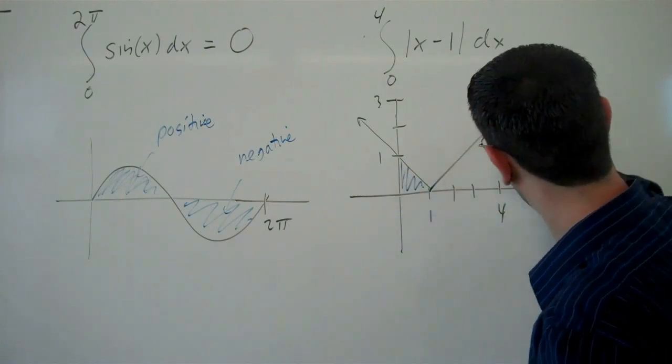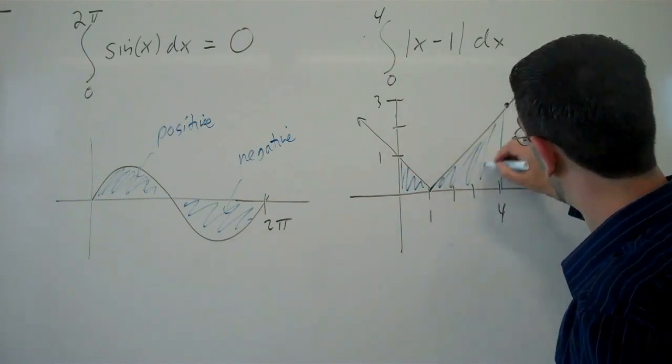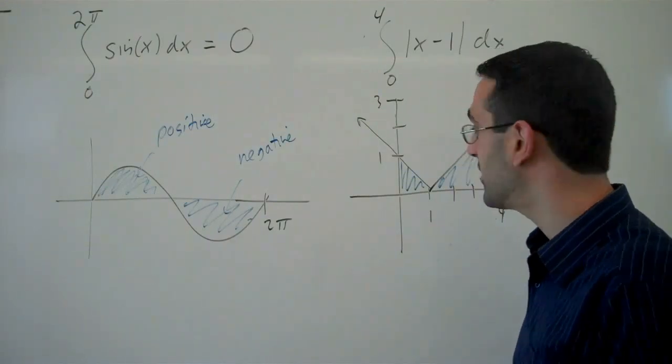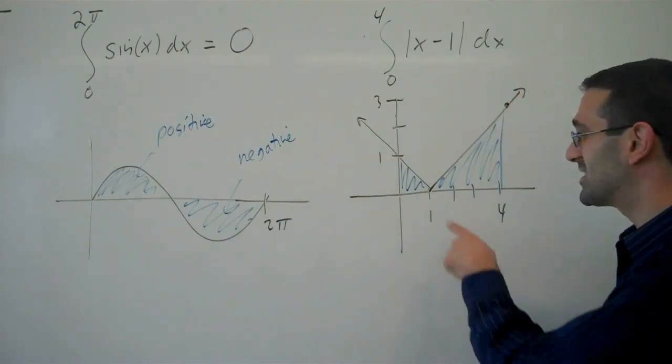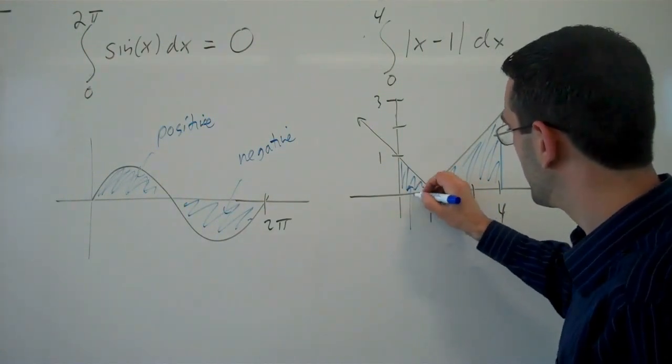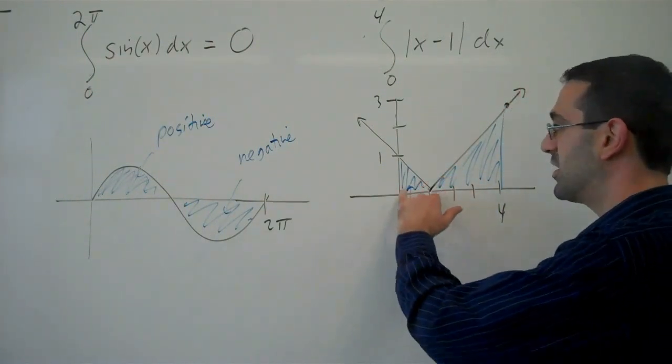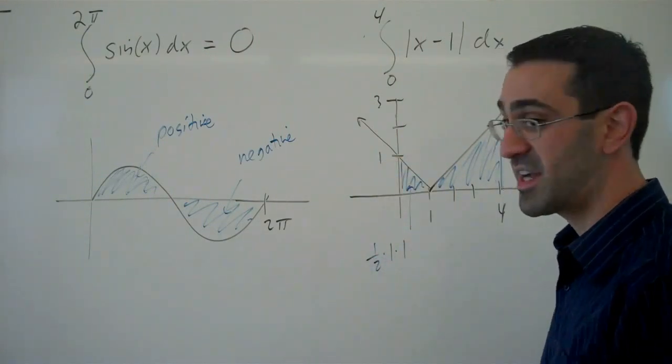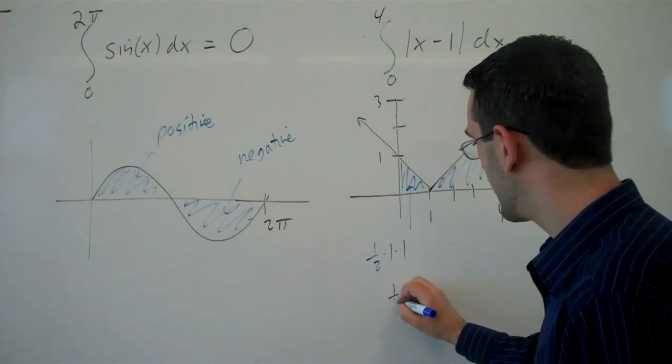In this case, it's all above the x-axis, so it's going to count as a positive quantity. In this case, we can interpret this as two triangles. So we could say that this piece of area is 1 by 1, so it has area 1 half base times height, because it's a triangle. So area of 1 half.